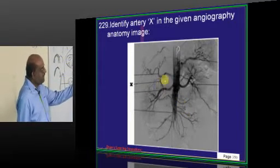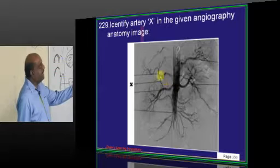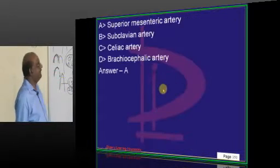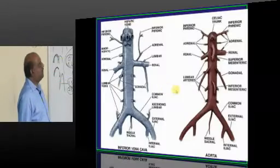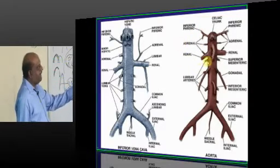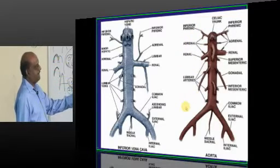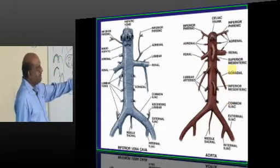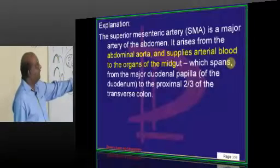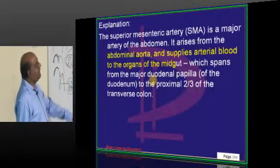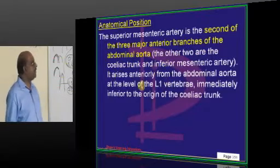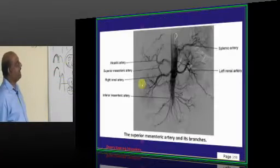What is this vessel in the angiography? You must know the branches of the aorta: inferior phrenic, adrenal, renal, lumbar arteries, inferior mesenteric, superior mesenteric, gonadal, etc. The vessel being shown here is the superior mesenteric artery, and you should know its branches.